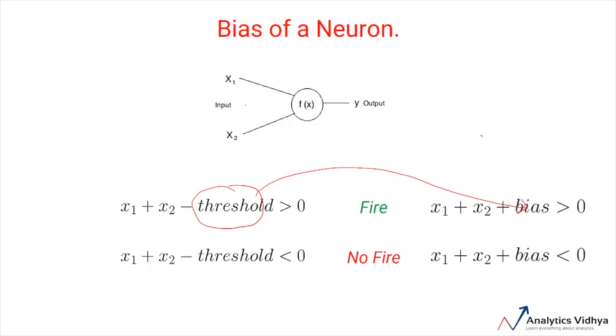If you have come across terms such as x0, w0 in some other machine learning systems, then in most likelihood they represent the bias of the system. One thing to note is that in artificial neural networks, all the neurons in a layer have the same bias.